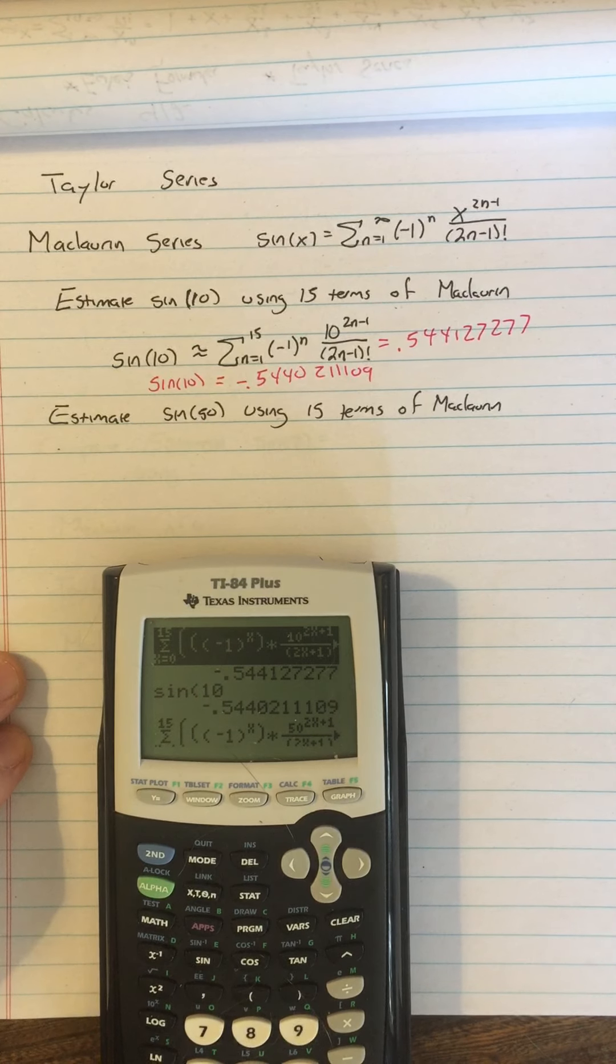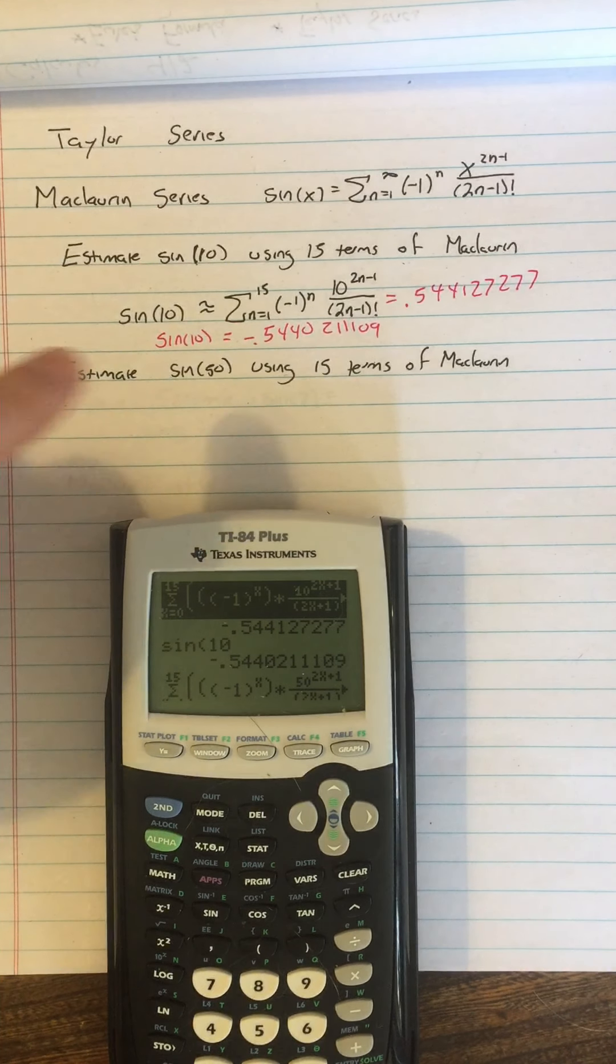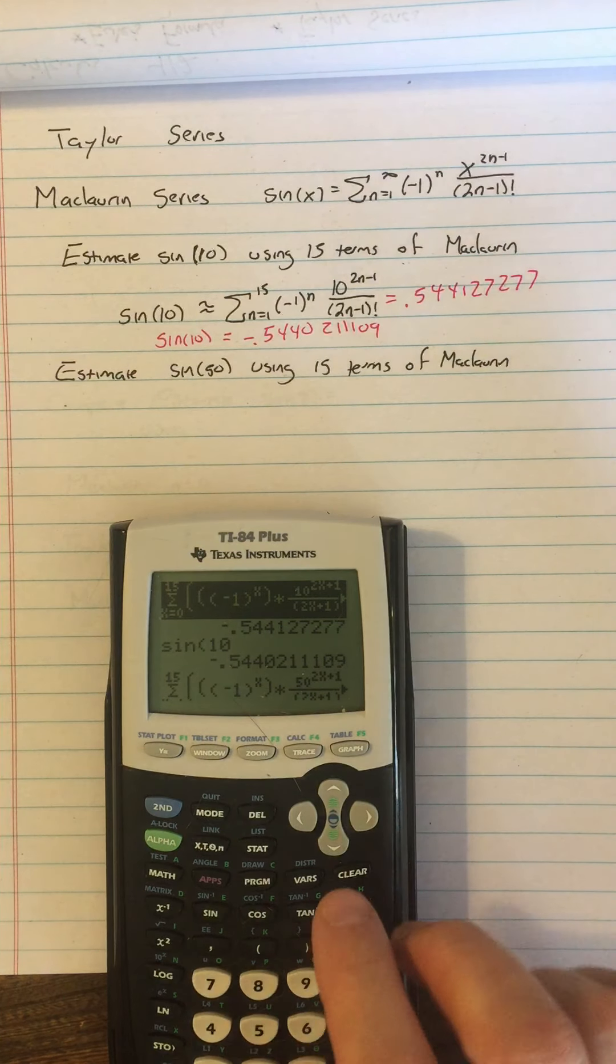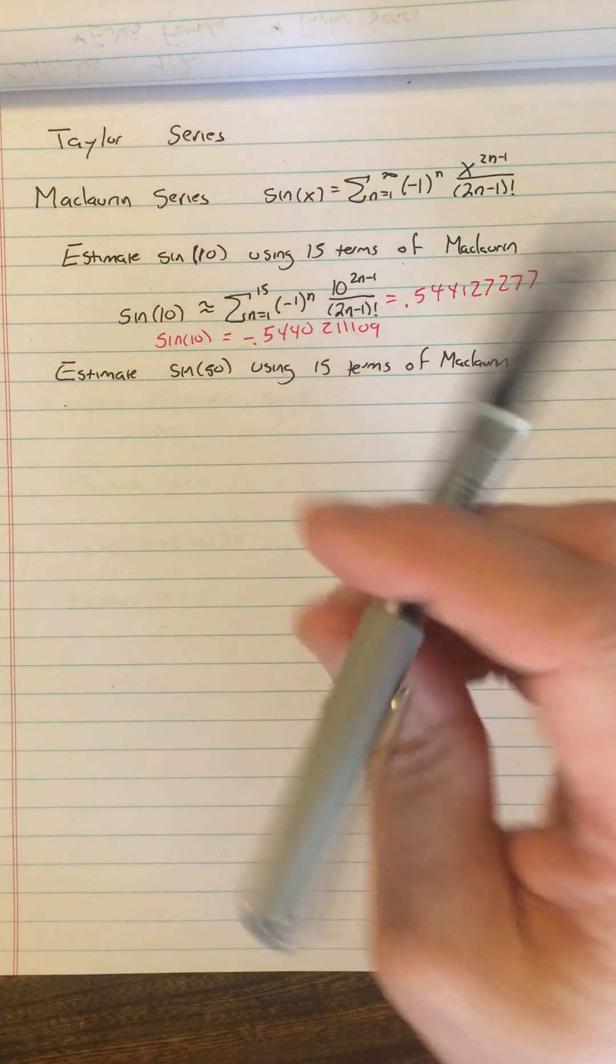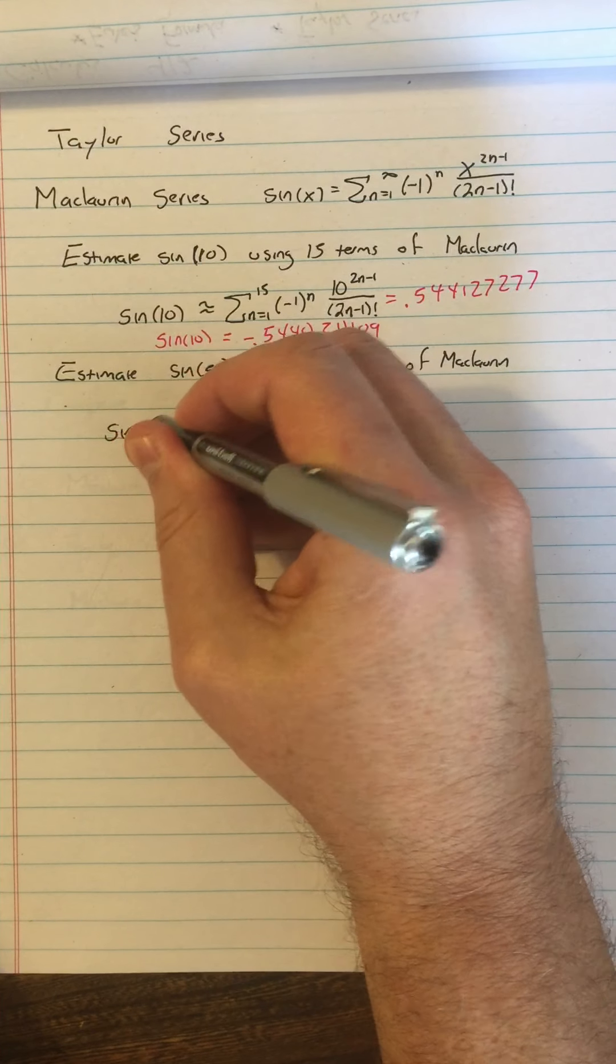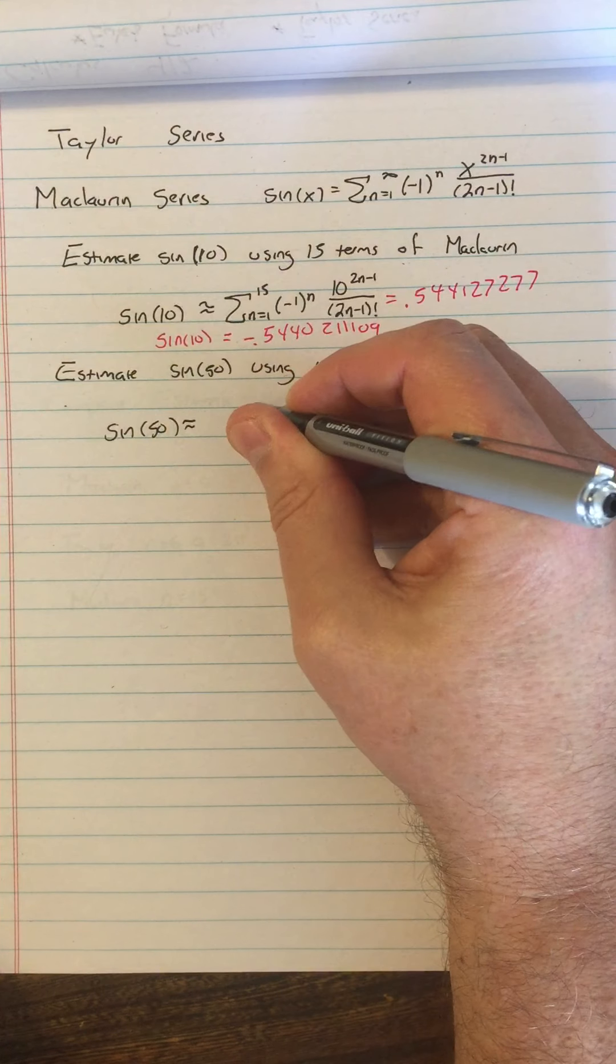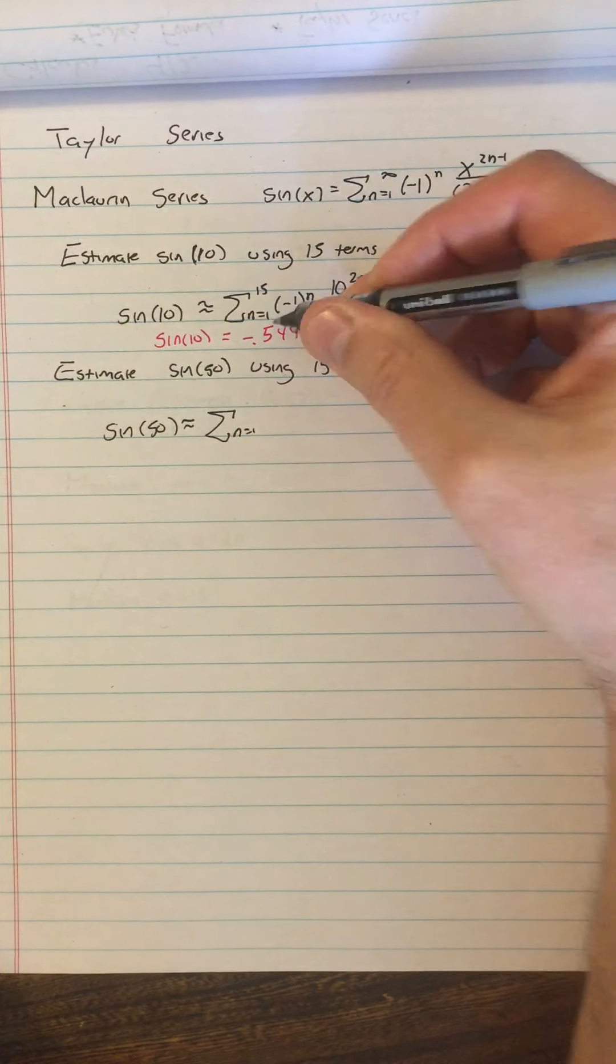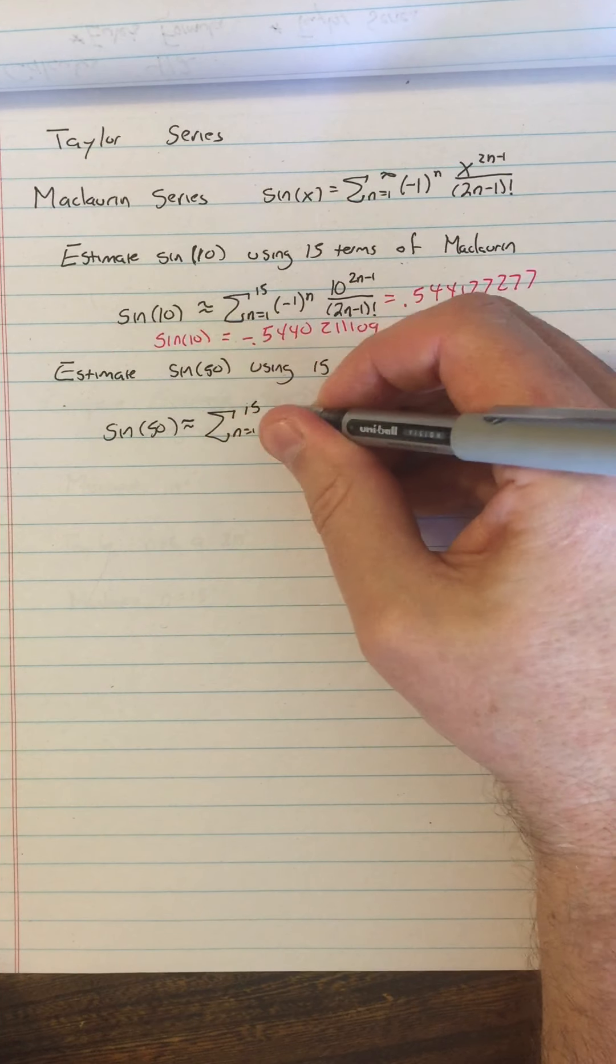And then we found that when we tried to estimate sine of 50 was the next thing we did. So we said, let's estimate sine of 50. So this is, you know, recap a little bit. Sine of 50, we try to estimate that using 15 terms, because this wasn't bad with 15 terms. Let's try it.